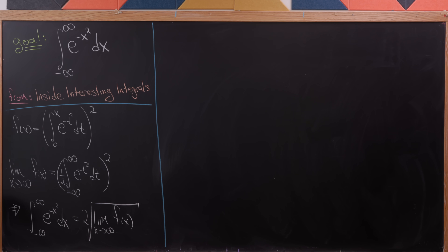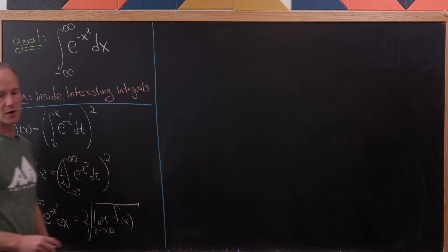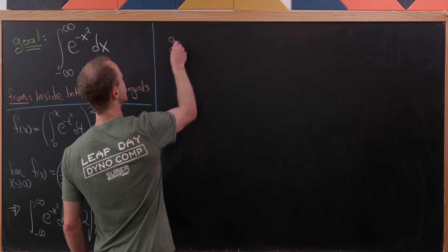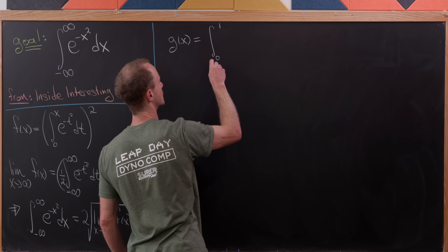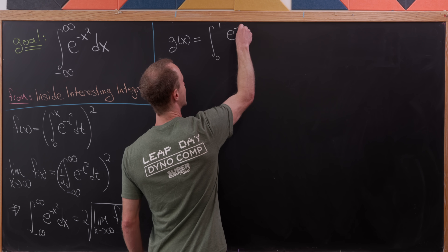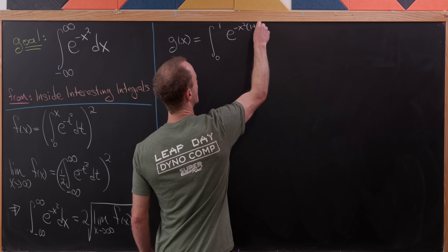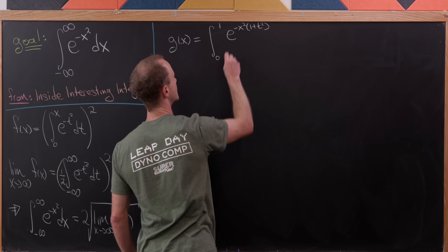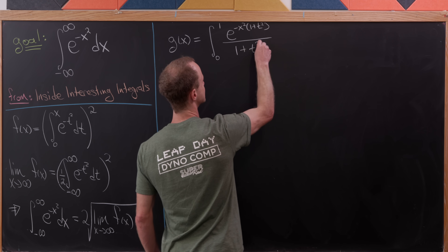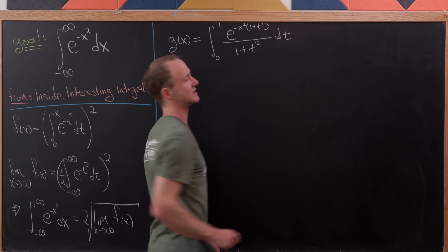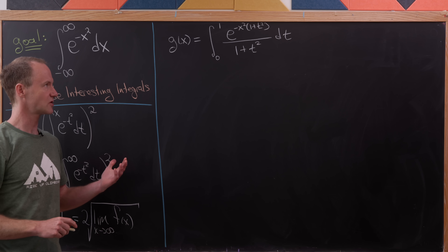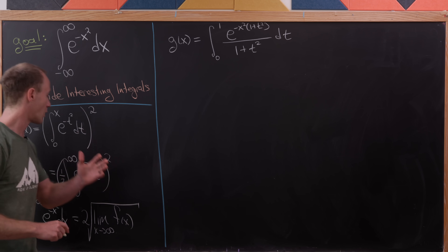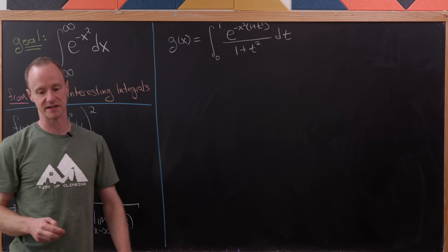We're not just going to use the function f of x. We're also going to use a function g of x, defined as the integral from 0 to 1 of e to the minus x squared times (1 plus t squared), all over (1 plus t squared), dt. That's definitely a crazy-looking function, but along with f of x, it's really key to this approach.